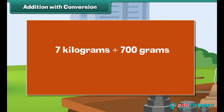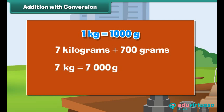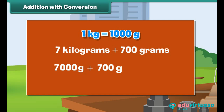Addition with conversion: Let us now add 7 kilograms with 700 grams. First, convert kilograms into grams. 1 kg equals 1000 grams, so 7 kg equals 7 into 1000, which is 7000 grams. Therefore, 7 kg plus 700 grams equals 7000 grams plus 700 grams, which equals 7700 grams.